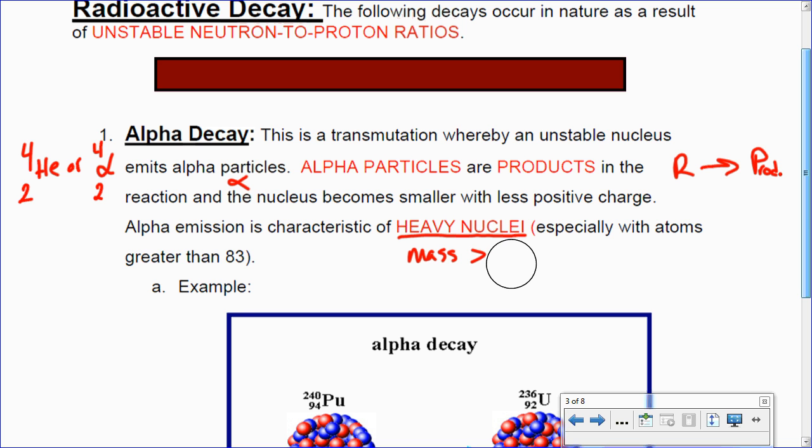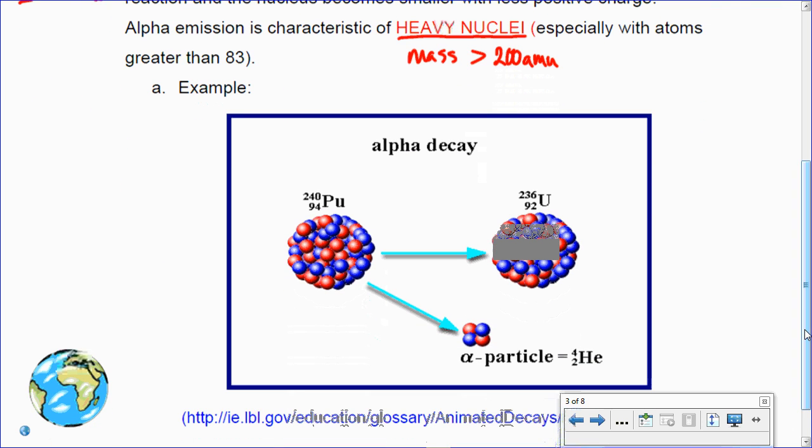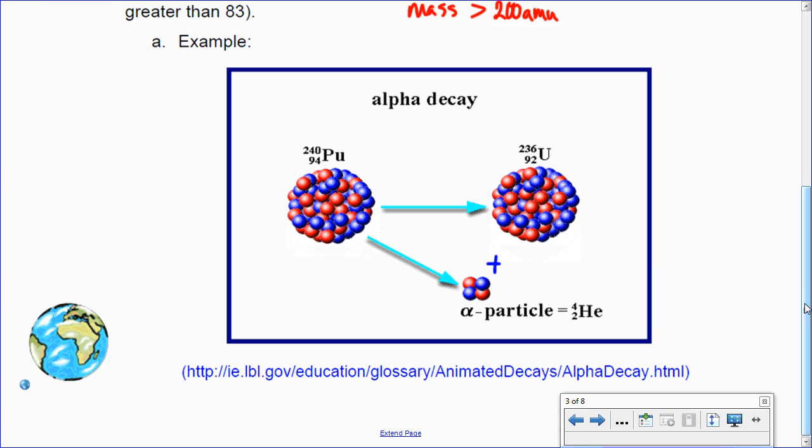There are products in the reaction. So these are always on the right-hand side, products. Products are on the right-hand side. And the nucleus becomes smaller with less positive charge. Alpha emission is a characteristic of heavy nuclei, like mass greater than 83 AMU. I'm sorry, not 83 AMU. Mass greater than, look at my periodic table here, 200 AMU. Which is, coincidentally, how much bismuth kind of weighs.